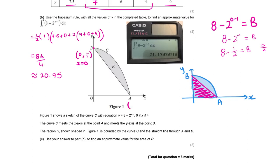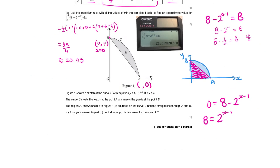For coordinate A, what does Y equal? 0. So now we know 0 equals 8 minus 2 to the power of (x minus 1). So 8 equals 2 to the power of (x minus 1). What does 8 equal? 2 cubed equals 2 to the (x minus 1), so 3 equals x minus 1, therefore x equals 4.